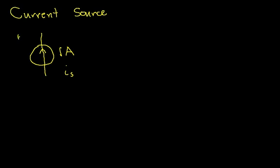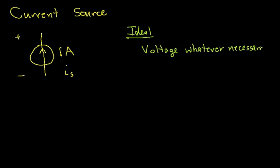Now this current source will have a voltage across it. And the idea behind a current source, an ideal current source, is that it will make the voltage whatever is necessary to have the current be one amp.